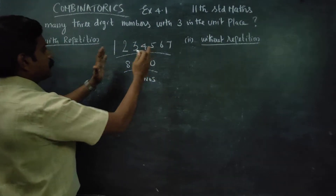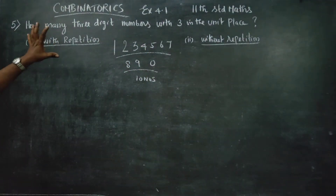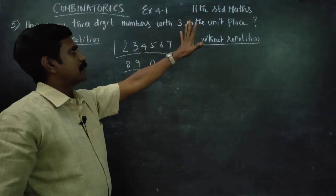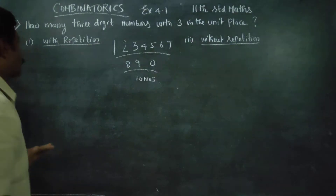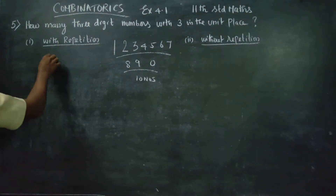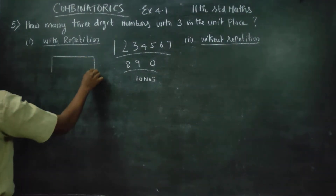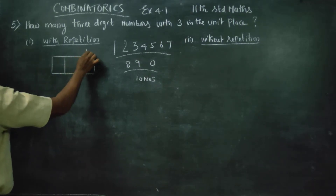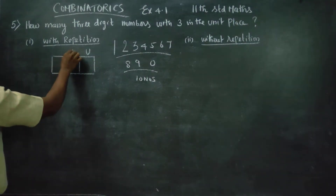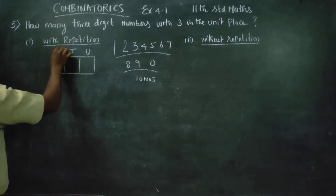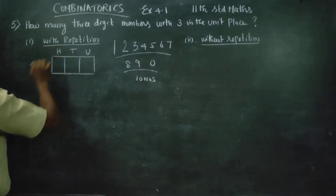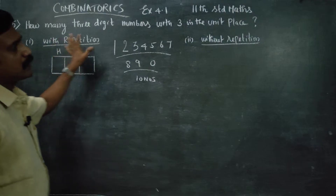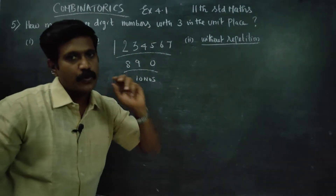The 10 numbers are used to form 3-digit numbers. I am opening a 3-digit box. The first box belongs to the unit place, the second box belongs to the tens place, and the third box belongs to the hundreds place. This is the fundamental principle of counting.